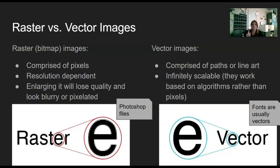With vectors, you can zoom in 1200 percent and it's still not going to get blurry — that's what happens in Illustrator. Now fonts, for the most part when they're created, are vectors. You can make a font really, really big and it doesn't get pixely because fonts are vectors. But when you put a font on top of something that's pictures and then save it in a file format, the whole image then becomes a raster image.